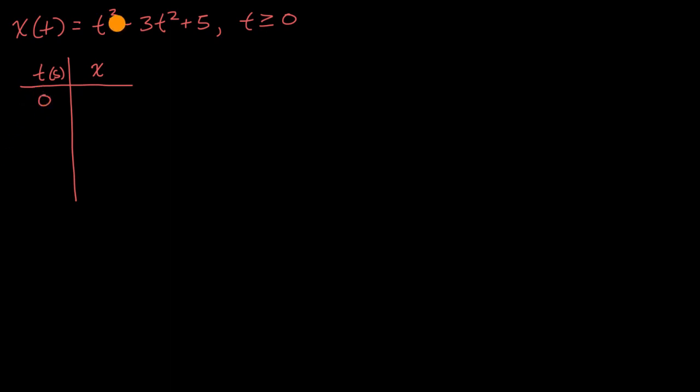At time equals zero, x(0) is just going to be 5. At time one, you're gonna have 1 minus 3 plus 5, so that is 1 minus 3 is negative 2 plus 5, is going to be, we're gonna be at position 3.